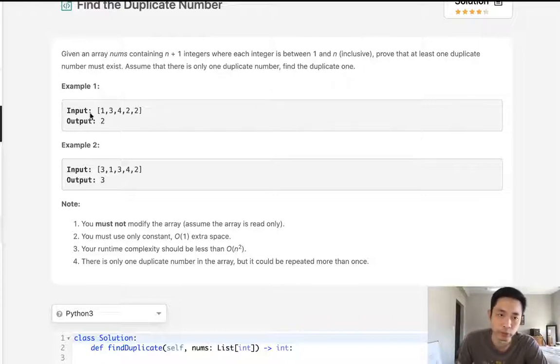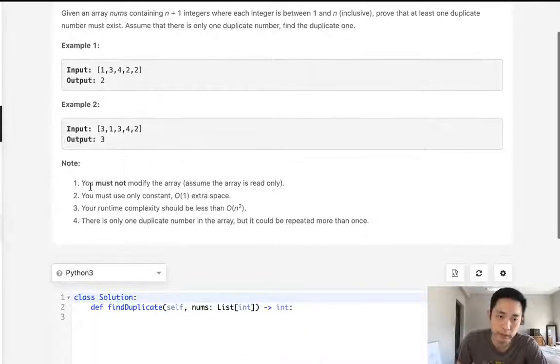The first approach might be to sort the array and find the duplicate that way, but we have some caveats here. First we can't modify the array, assume that the array is read only, and we can only use constant space, constant extra space.